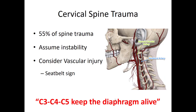Cervical spine trauma is definitely the most common type of spine trauma — more than half of traumatic spine injuries. Anytime C-spine injury is suspected, assume it's unstable and get that collar on as quickly as possible. An important point is that there are very important vessels that traverse through the C-spine, so if there's bony disruption in the neck, assume there's also vascular injury. A seatbelt sign near the neck in a motor vehicle collision can suggest a high-mechanism impact to the neck.